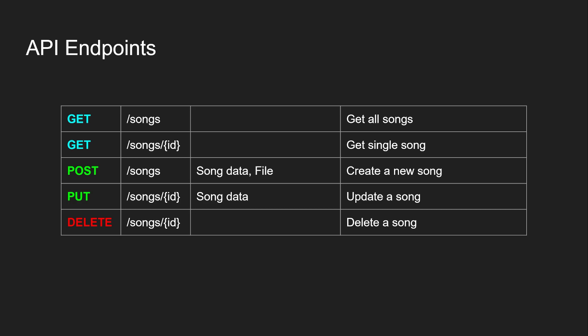The API endpoints on the Spring back end follow REST principles over HTTP. There's a GET route to retrieve all songs from the database, and another GET route to get a specific song by ID — useful for displaying data when editing a song.